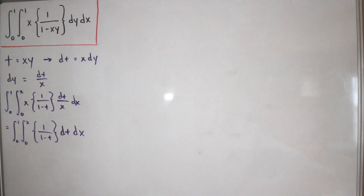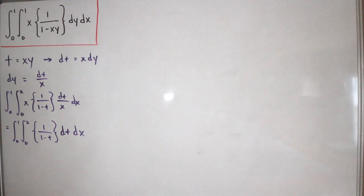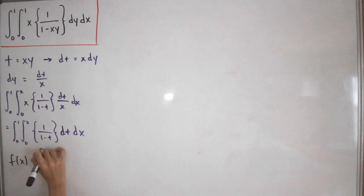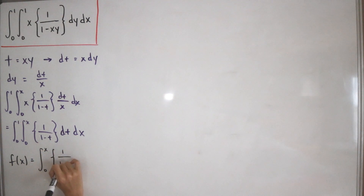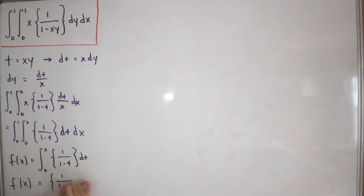Now we use integration by parts. Let f(x) = the integral from 0 to x of the fractional part of 1/(1-t) dt. By the Fundamental Theorem of Calculus, f'(x) = the fractional part of 1/(1-x). We also let g'(x) = 1, so g(x) = x. This sets up our IBP formula with these functions.